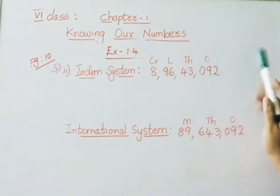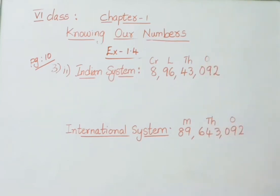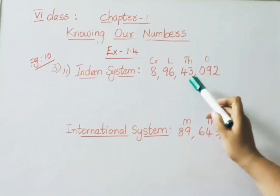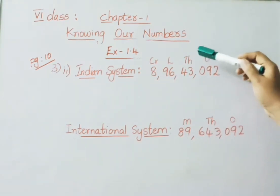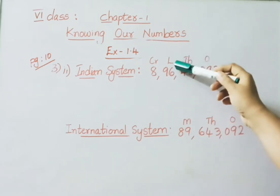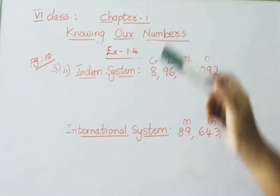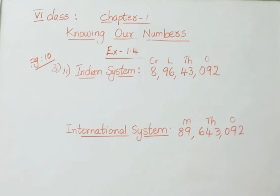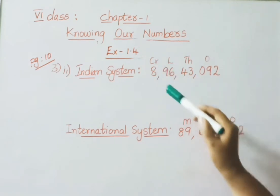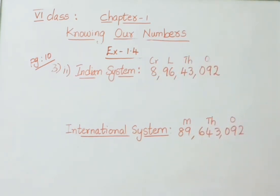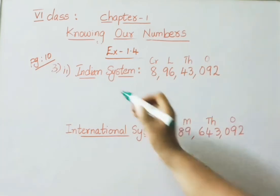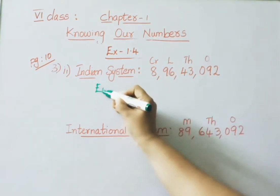For the second example: in the Indian system, separating right to left — first three digits ones period, next two thousands period, next two lakhs period, remaining crores period. Reading: eight crores ninety six lakh forty three thousand ninety two.